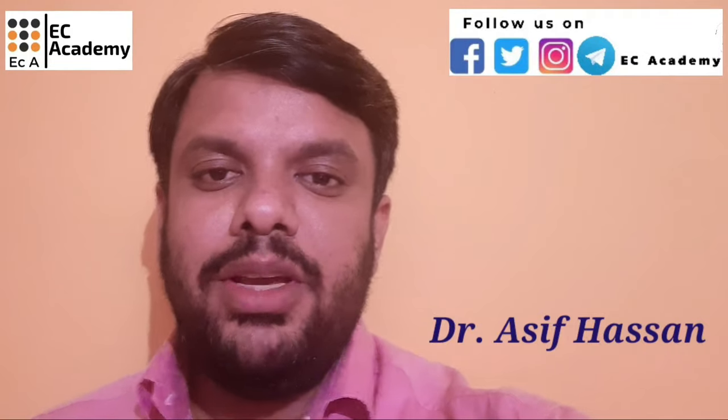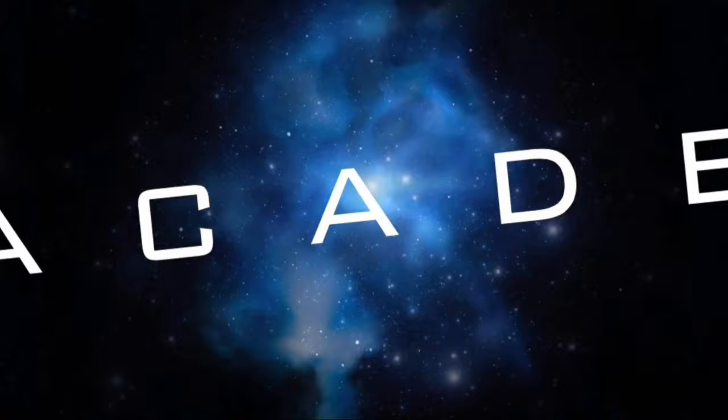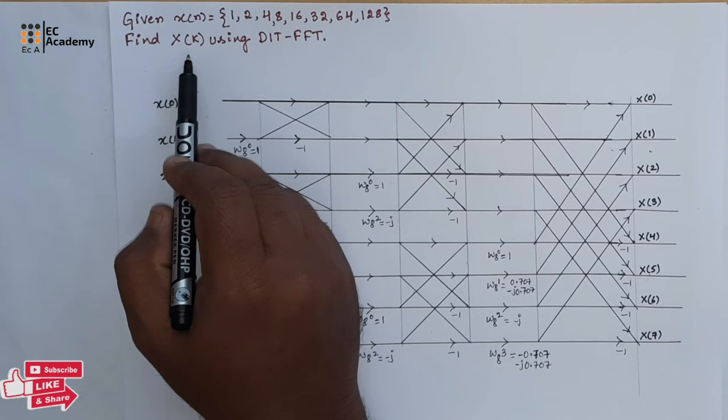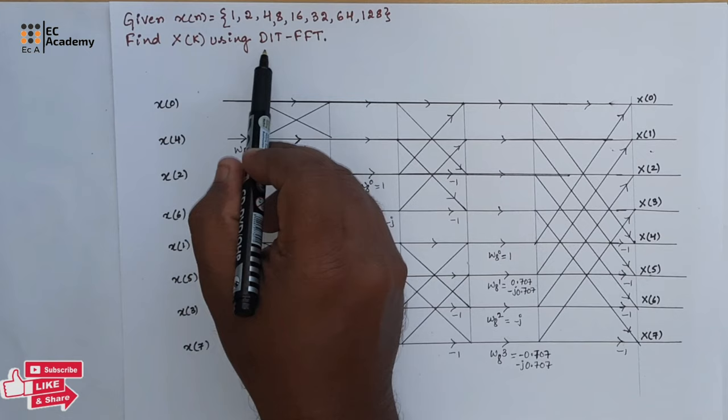Hello friends. Welcome to EC Academy. In this lecture, let us understand the problem on DIT FFT. Here x of n is given, and we need to find x of k using DIT FFT, that is, using decimation in time fast Fourier transform.